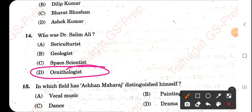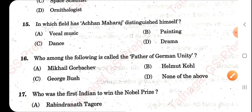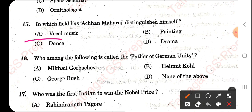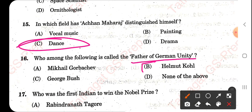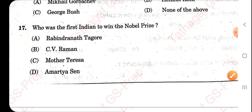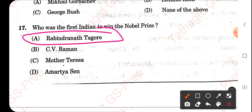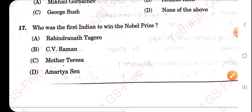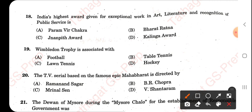Dr. Salim Ali is an ornithologist — a repeated question. Chhau Maharaja distinguished himself in dance. Who is called the father of German unity? That is Helmut Kohl. Who was the first Indian to win the Nobel Prize? That is Rabindranath Tagore — this question has been repeated three times in recent papers. India's highest award for exceptional work in art, literature, and public service is the Bharat Ratna.